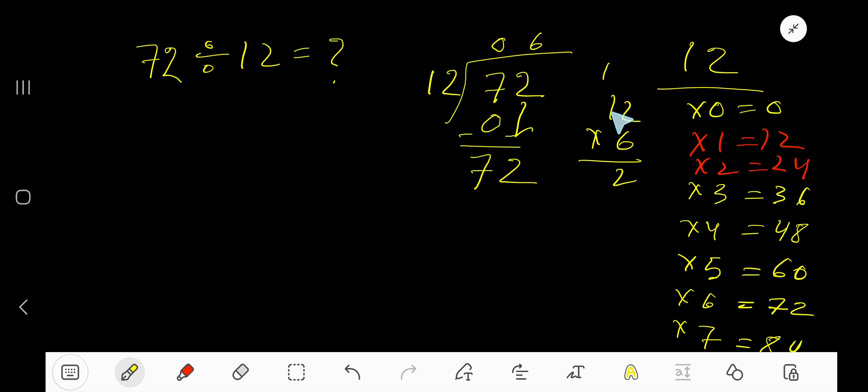6 times 1 is 6, plus 1 is 7, giving 72. Subtract to get 0 as our remainder. We are done, so our answer is 06, which means 6.